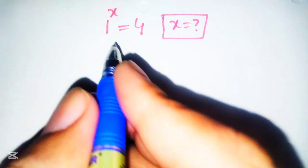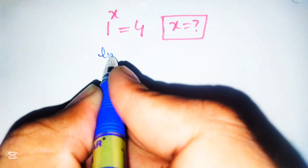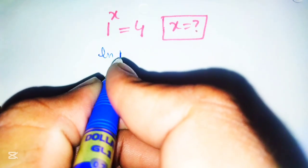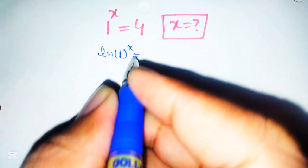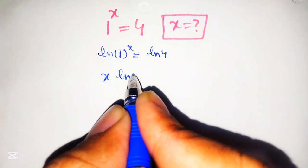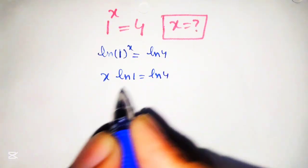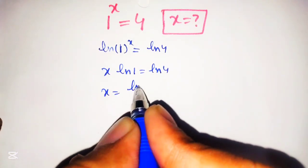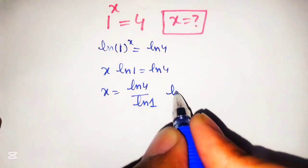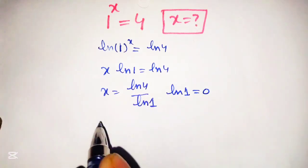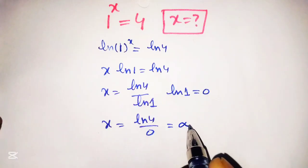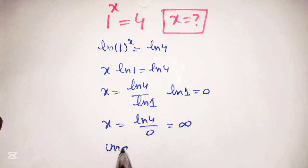Let's take the natural log on both sides. Natural log of 1 raised to power x is equal to natural log of 4, and x multiplied by natural log of 1 is equal to natural log of 4. So x is equal to natural log of 4 over natural log of 1. Since natural log of 1 is equal to 0, x equals natural log of 4 over 0, which is undefined.